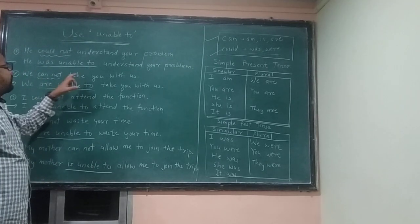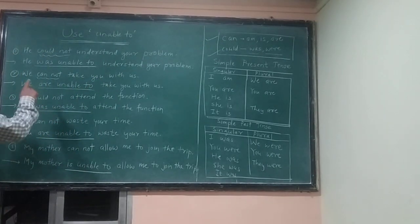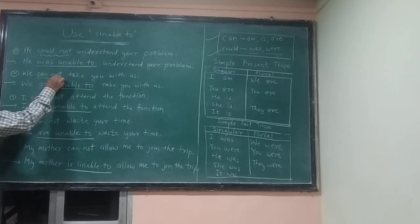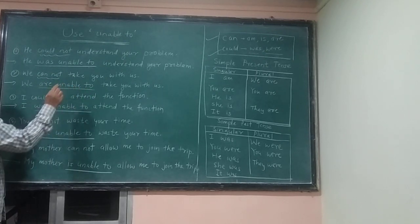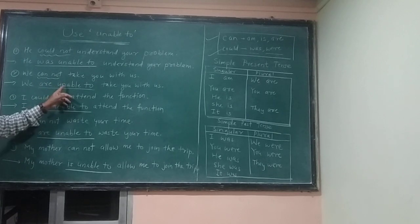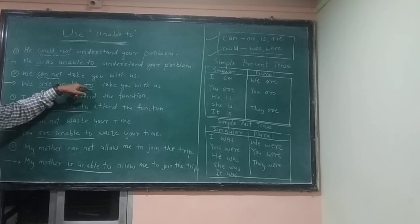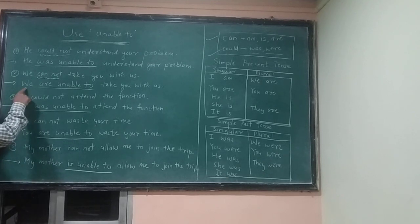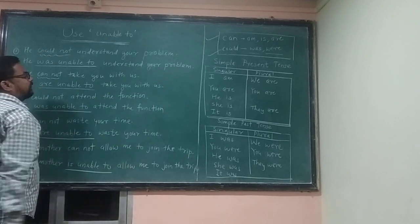The second sentence: 'We cannot take you with us.' We remove 'cannot' and use 'are' because the subject is 'we.' The sentence becomes: 'We are unable to take you with us.'